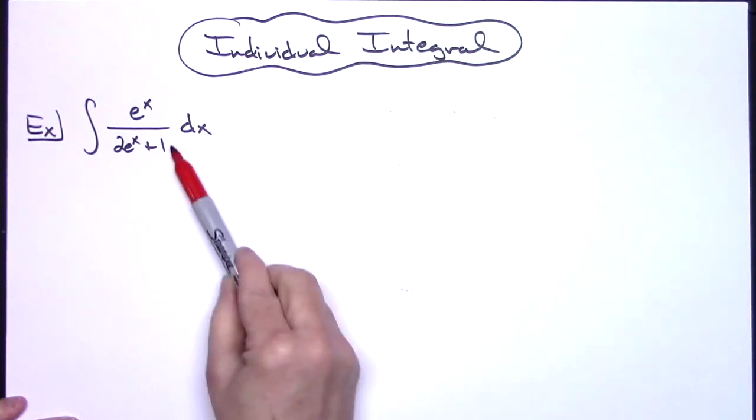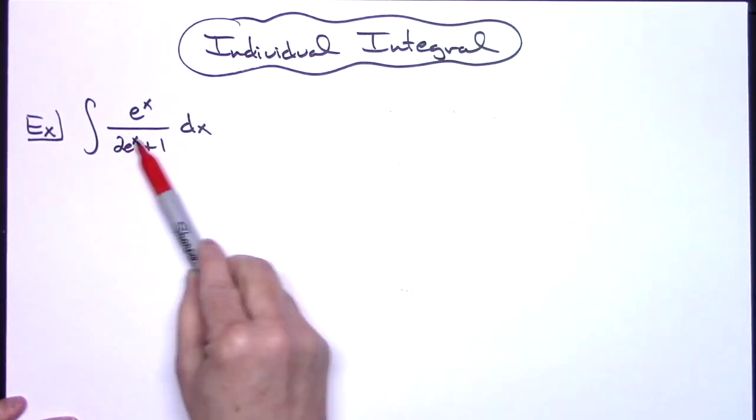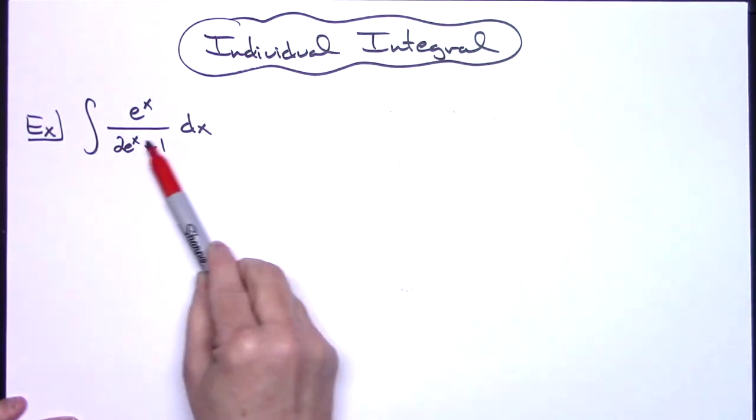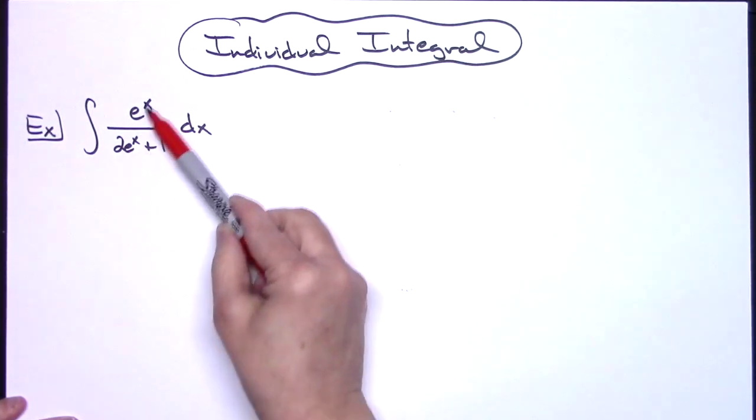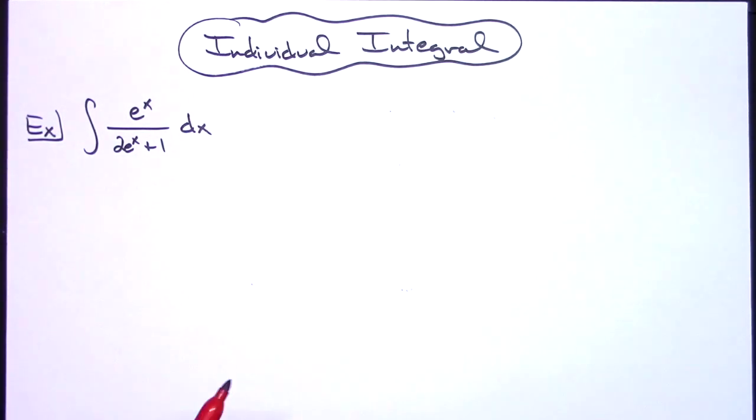I'm going to take a look at this denominator and I'm going to realize that when I take the derivative of that denominator I'm just going to get a 2e to the x which means I'm going to be able to cross out that e to x that's in the numerator.